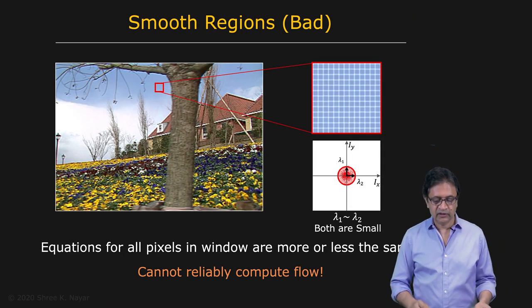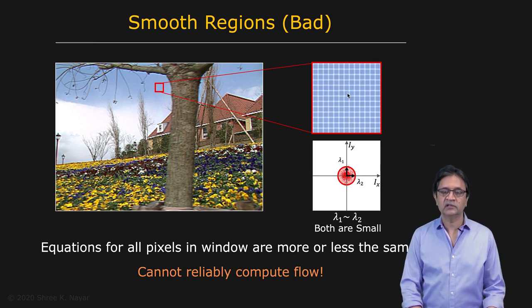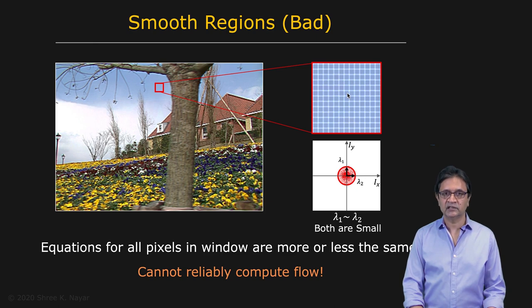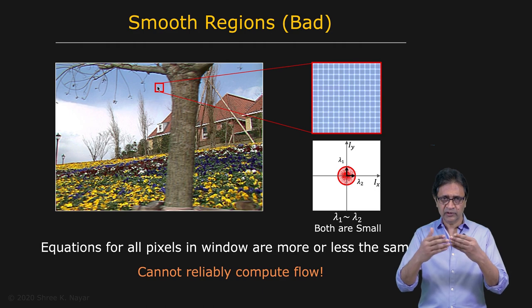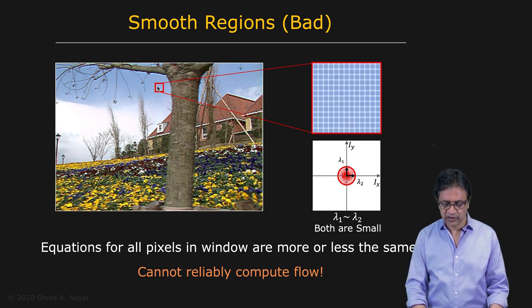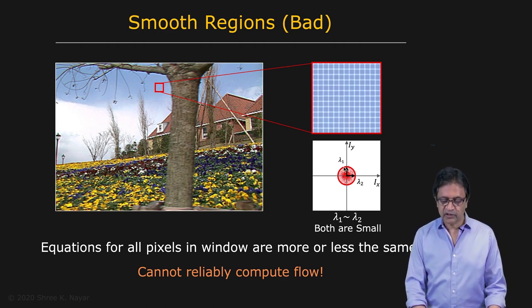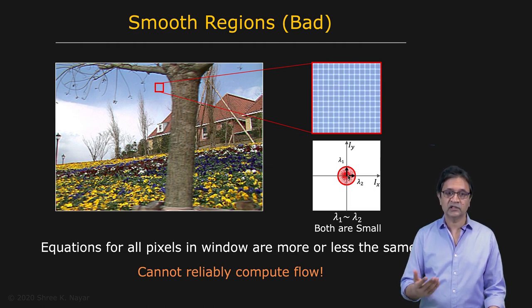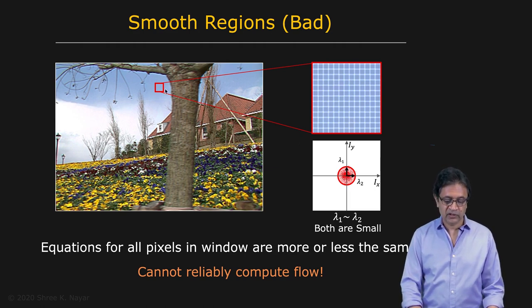Well, let's take a look at this scenario here where you have basically a texture-less patch in the scene and we want to compute the optical flow right here. Well, this is what the patch looks like. And if you look at the spatial gradients Ix and Iy and you simply plot them—that is, you're taking two images, but you take the first image and compute the spatial gradients—these are the spatial gradients right here.